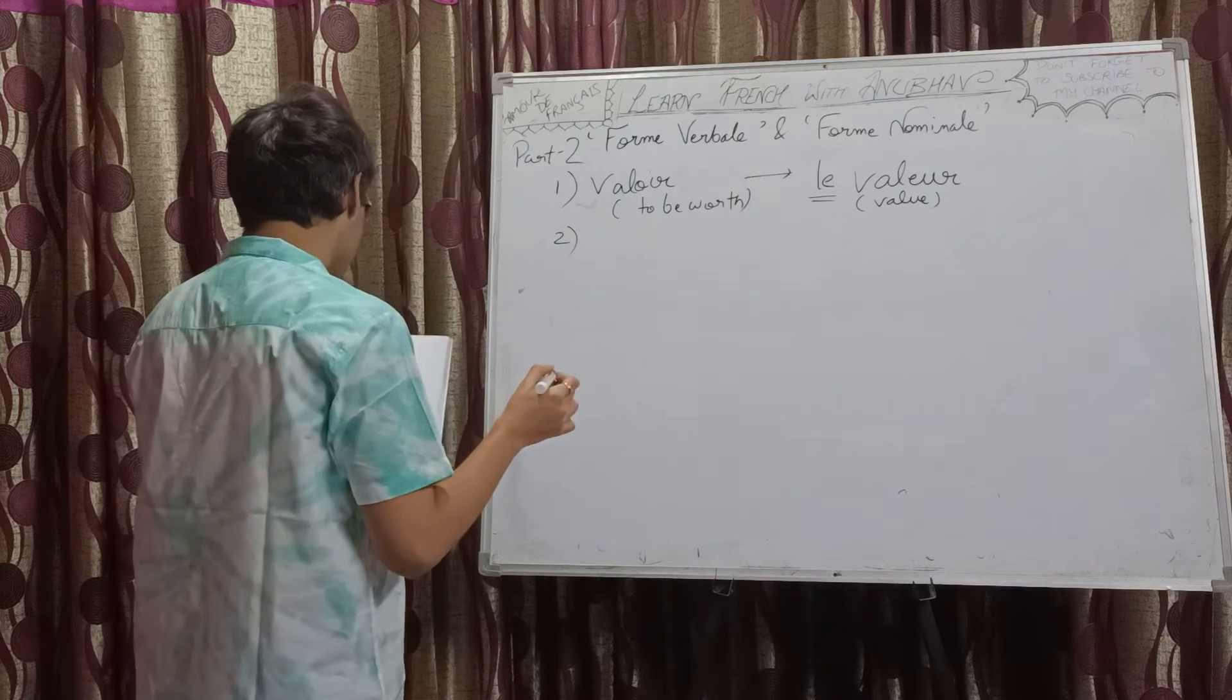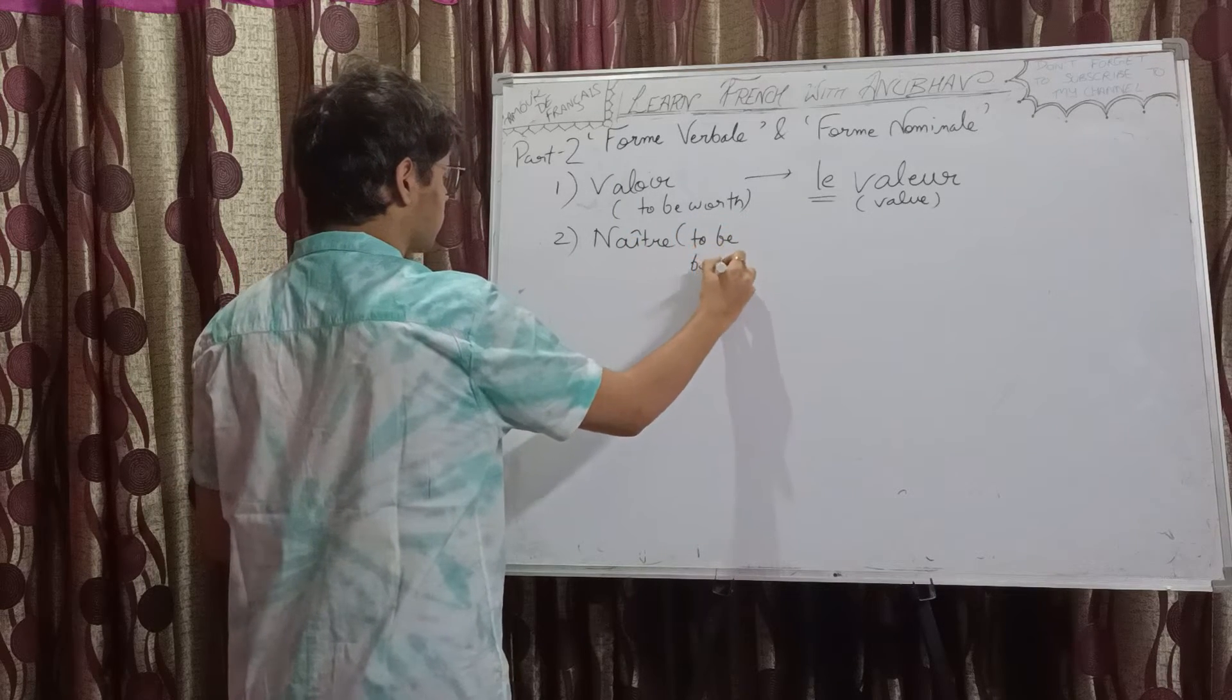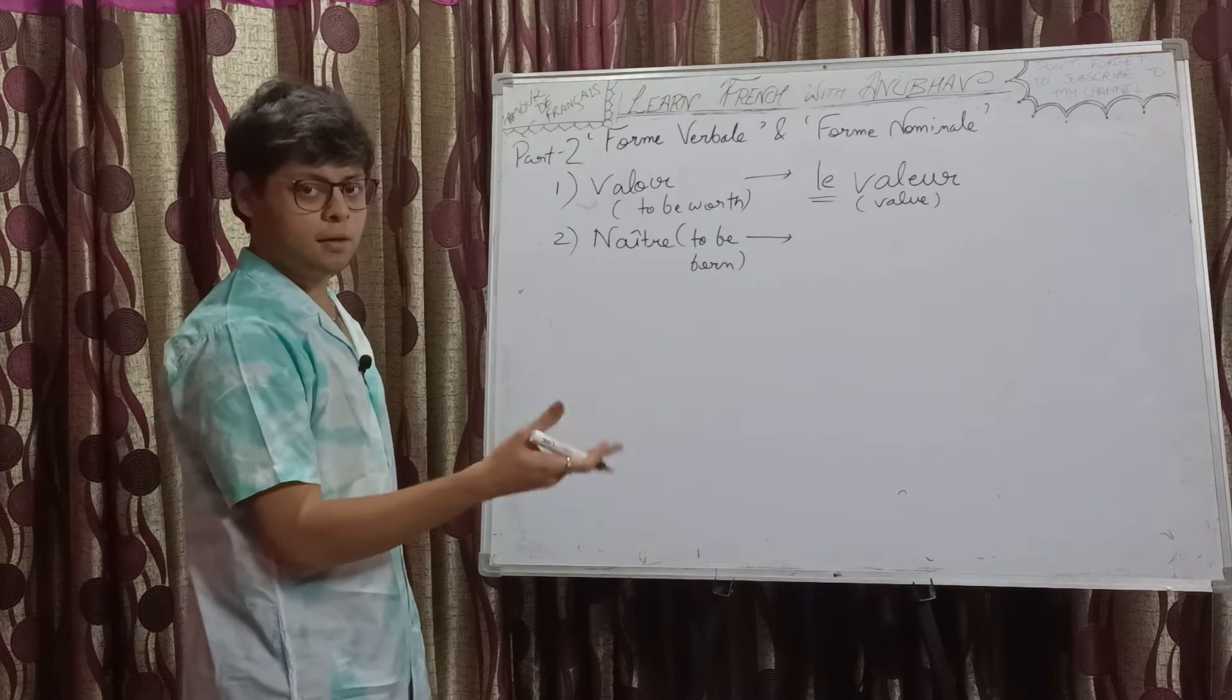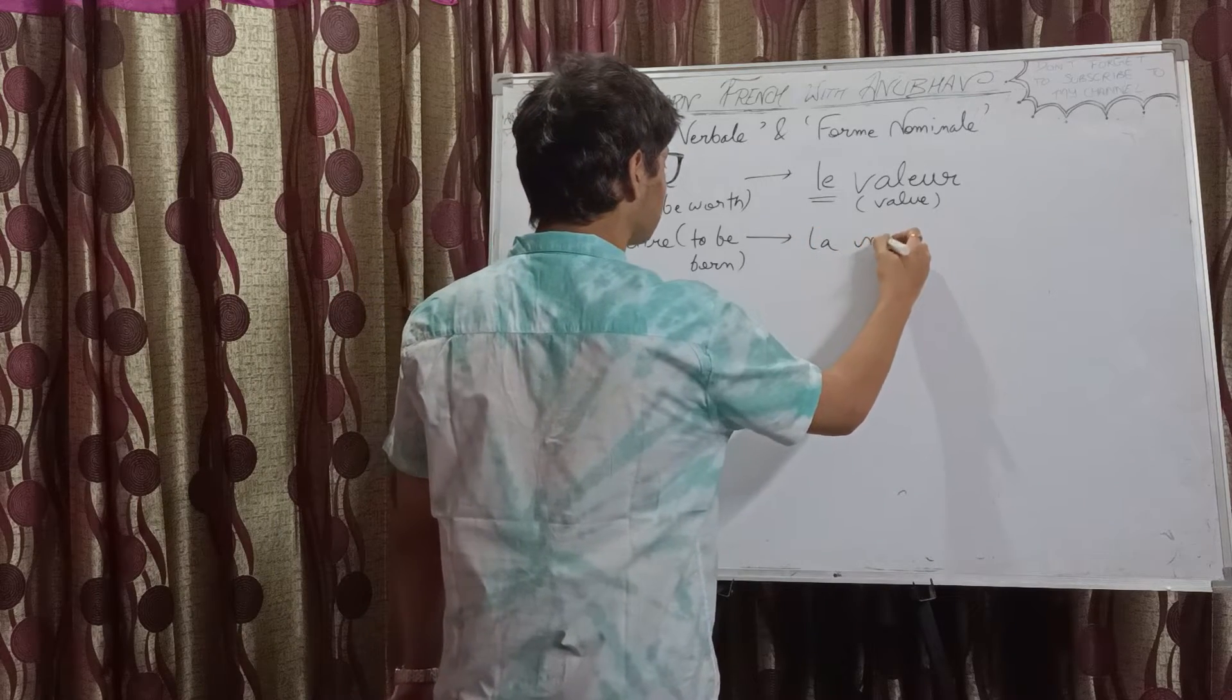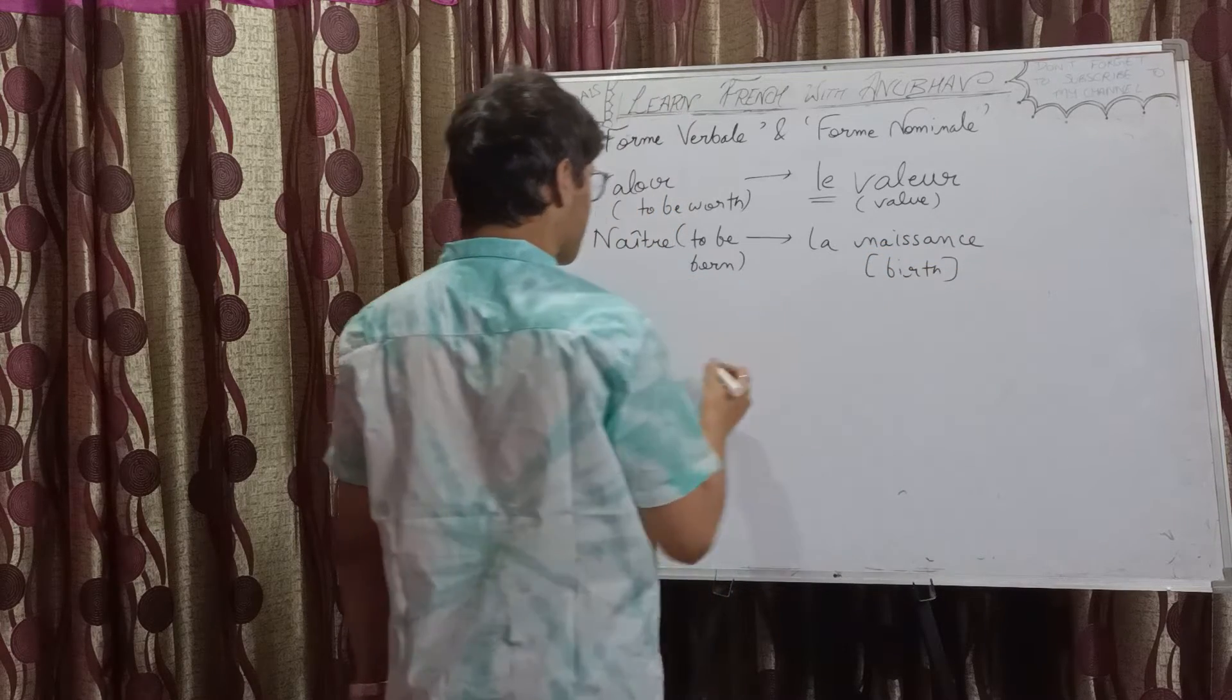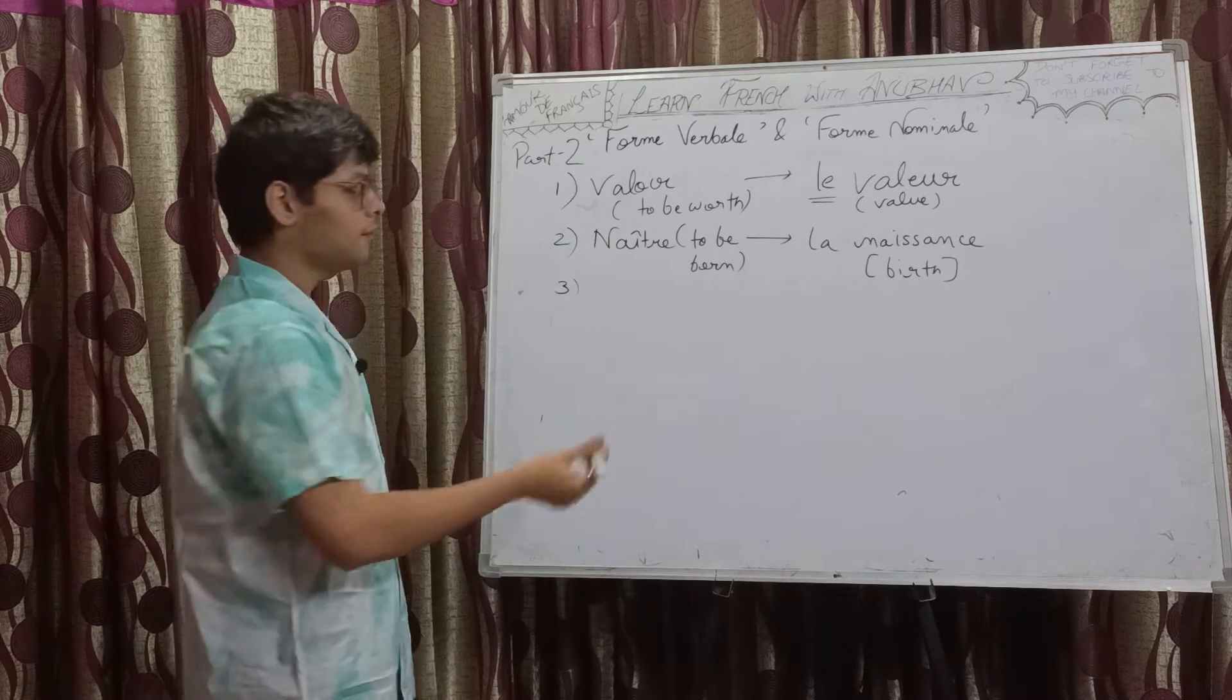Number 2, we have naître, to be born. The noun form of to be born will be what? Birth. La naissance. Opposite of birth is what? Opposite of naître is mourir.